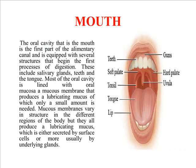Let's discuss the first part of the digestive system — the mouth. The oral cavity, also known as the mouth, is the first part of the alimentary canal and is equipped with several structures that begin the first process of digestion. This includes the salivary glands, teeth, tongue, and many others. Most of the oral cavity is lined with oral mucosa, a mucosal membrane that produces a lubricating mucus, which is only a small amount required for the proper propulsion and initiation of digestion.